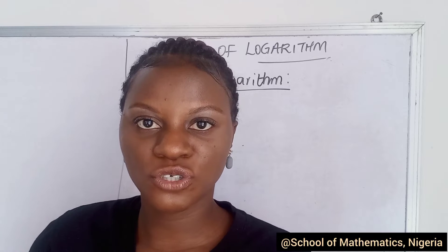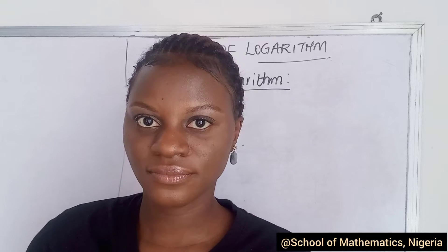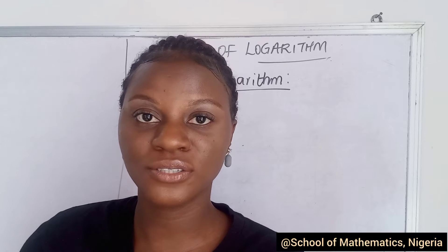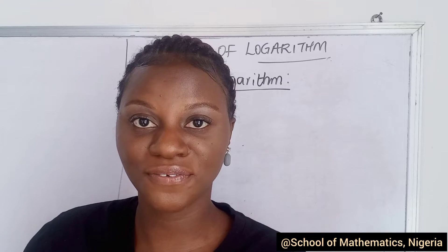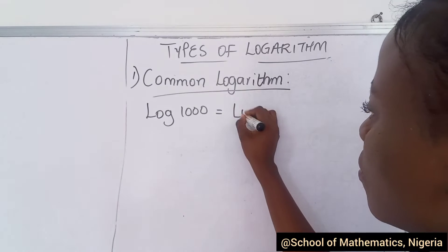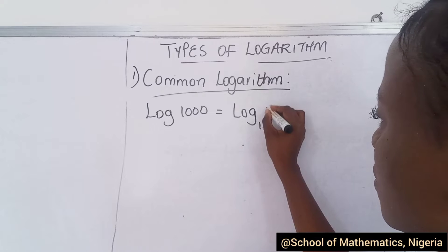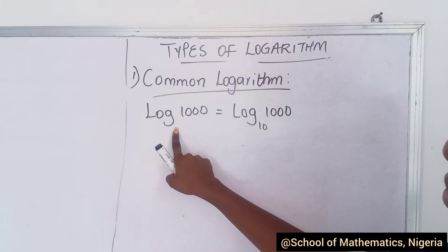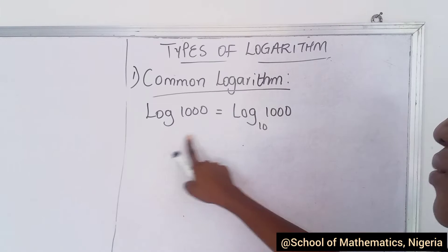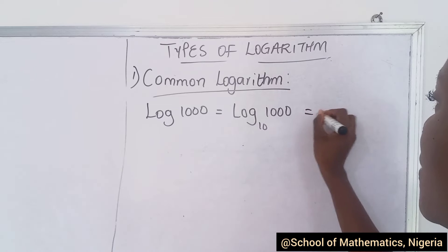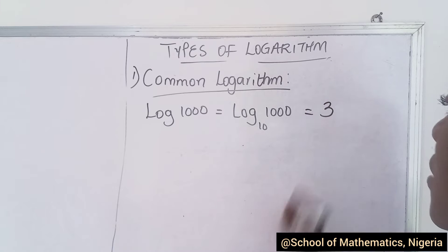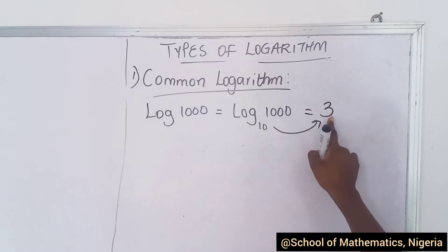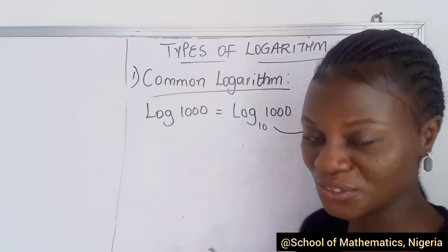That's how you have it on your calculator — as a default you have just 'log' with no base. Check your calculator. So this is log to base 10 of 1000; because there is no base, you automatically know it's base 10, and your answer is 3. How do we know that? When you raise 10 to the power of 3 you get 1000.